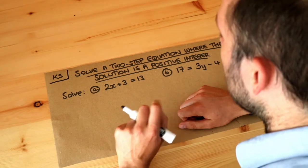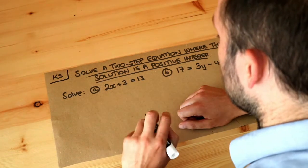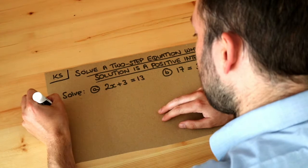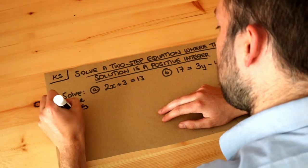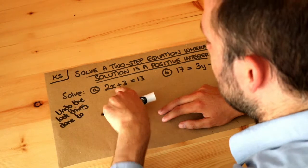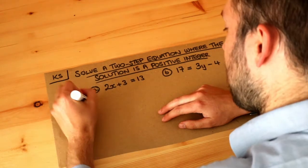And the other thing you need to think about is undoing the last thing done to the variable. So I'll explain what I mean by this. Undo the last thing done to the variable. And by the variable, I mean the letter, in this case x. So that's the key point here.